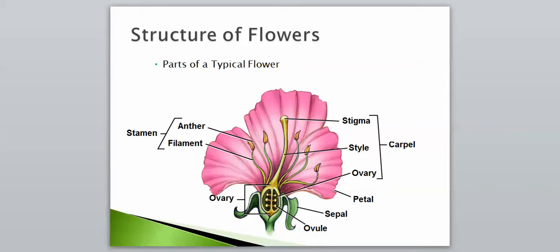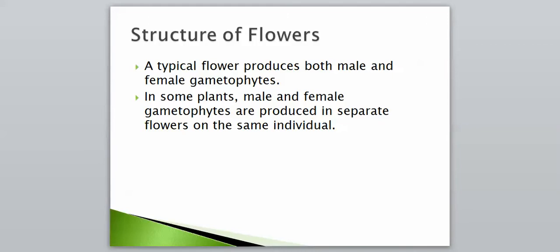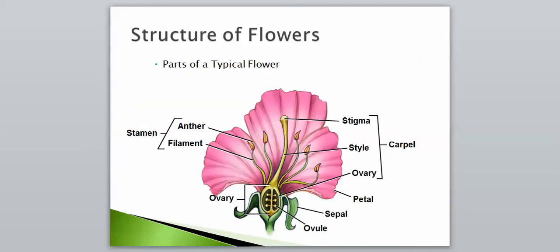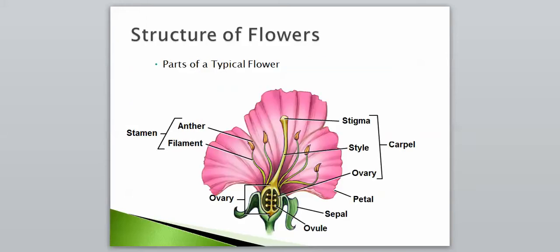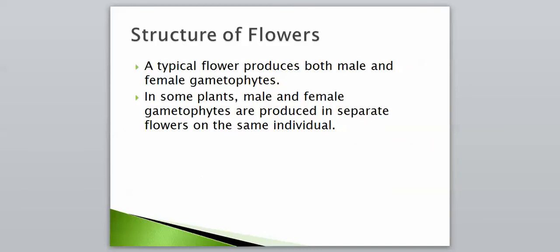Petals are the big, brightly colored parts that attract pollinators. Sepals protect the bud early on, then fall down below the plant once it opens. A typical flower produces both male and female gametophytes — male being the stamen, anther, and filament; female being the stigma, style, and ovary. In some plants, the male and female gametophytes are produced in separate flowers on the same individual, so you might have only female parts on one flower and only male parts on another. That just depends on the plant. That's it for this video — let me know if you have any questions.